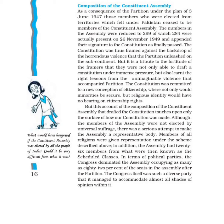3 June 1947 ke plan ke according, partition ke baad jitne bhi representatives the, woh constituent assembly ke members nahi rahe jo ki Pakistan ke constituencies se chun kar aaye the. Constitution assembly ke jo members the woh 299 reh gaye, aur 26 November 1949 ko total 284 members hi present the aur in present members ne constitution par signature ki. Then on 26 January 1950 our constitution came into force.